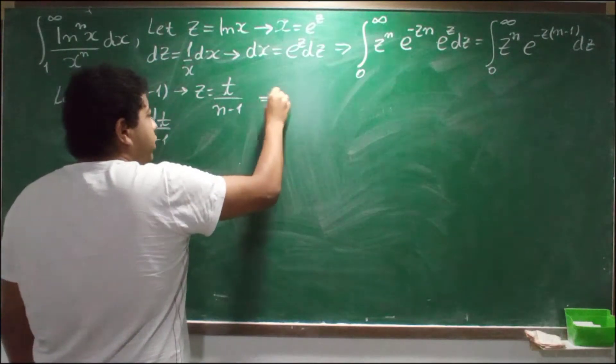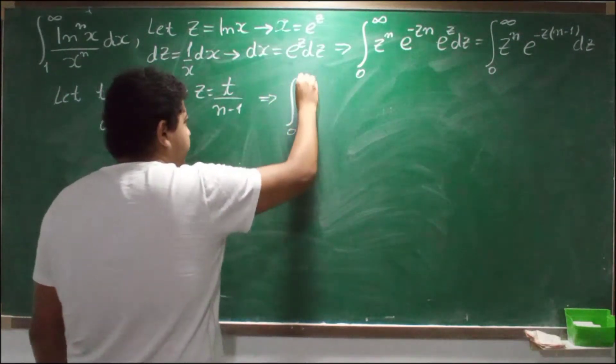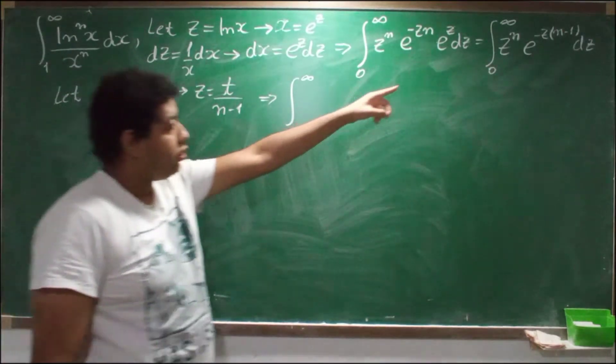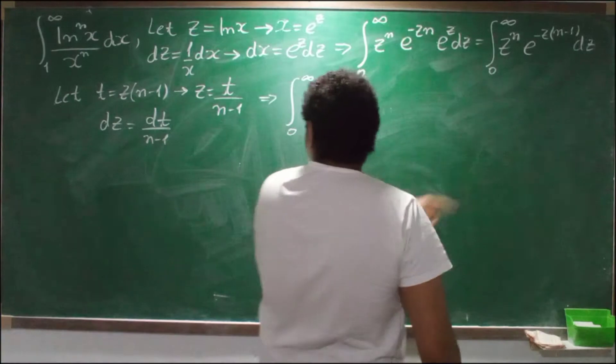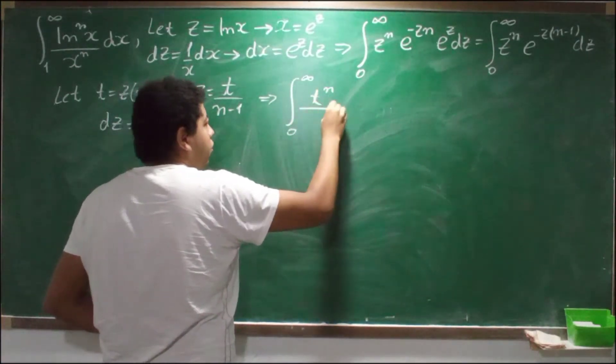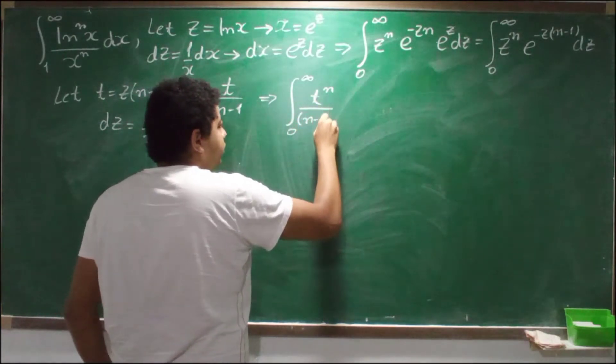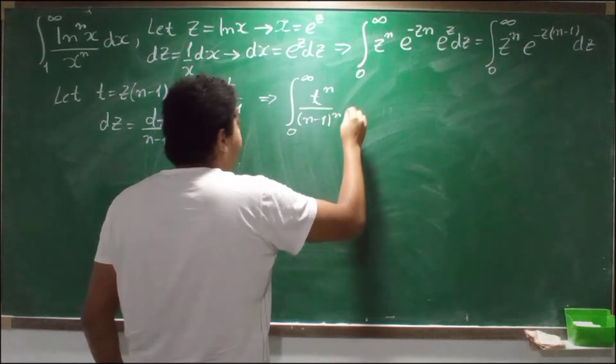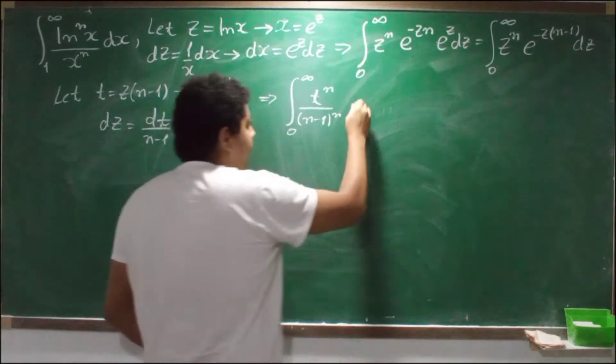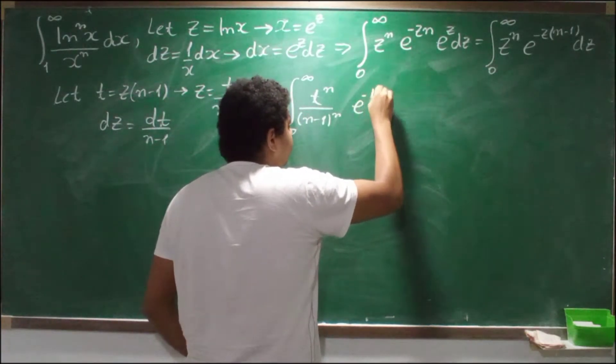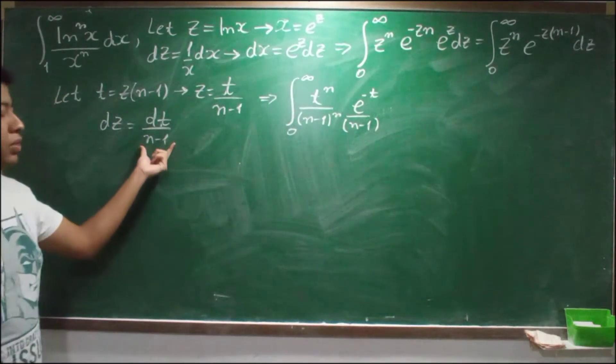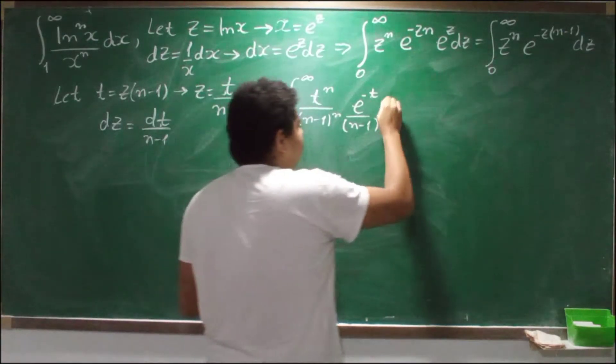So we're going to have the integral from 0 to infinity. We have z to the n power, so we're going to have t to the n over n minus 1 to the n times e to minus t. This n minus 1 here, dt.